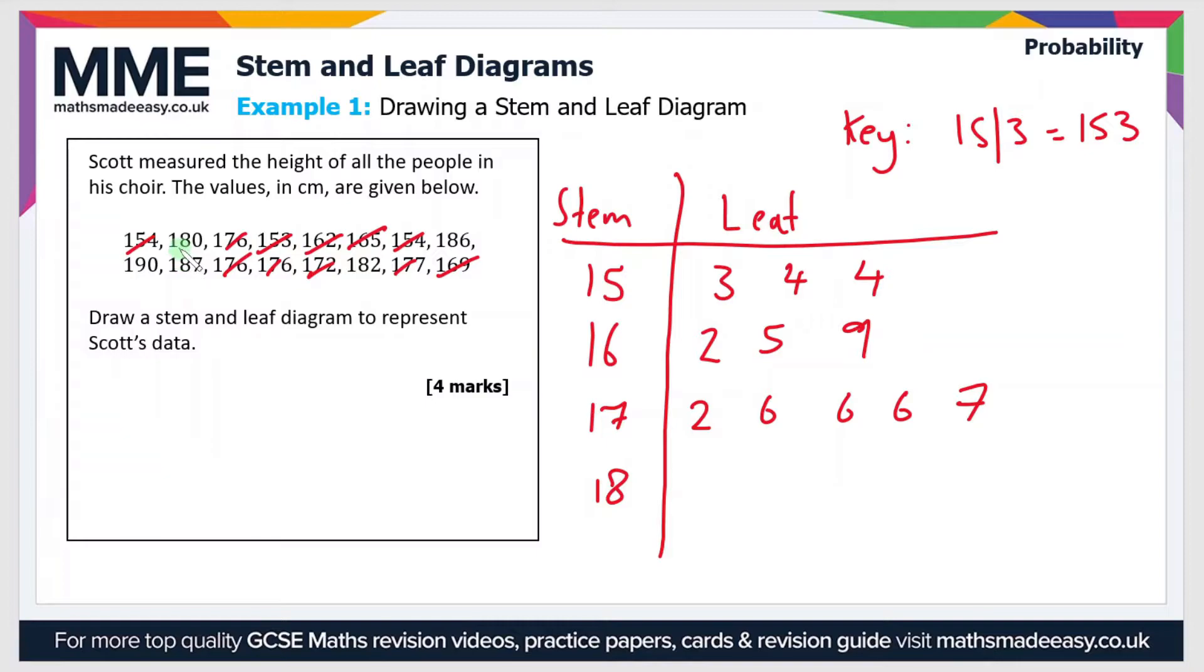And then we'll move on to the 180s now. So notice how there's a value of 180 so we put a zero in the leaf section of the diagram. And the next values are 182, 186 and 187. So let's add those. And then finally the last value on the diagram will be 190.